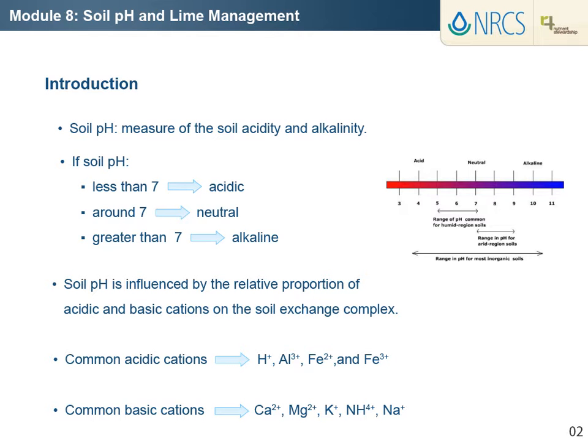Soil pH is influenced by both acidic and basic influencing ions in the soil. Common acidic cations, or positively charged ions, are hydrogen, aluminum, and iron, whereas common basic cations include calcium, magnesium, potassium, ammonium, and sodium.